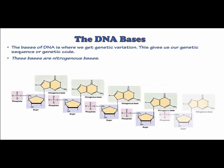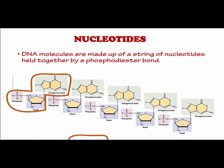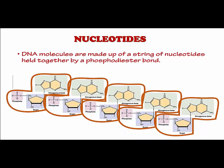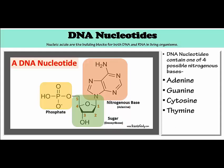The bases of DNA are where we get genetic variation. This gives us our genetic sequence or genetic code. These bases are nitrogenous bases. DNA molecules are made up of a string of nucleotides held together by phosphodiester bonds. DNA nucleotides contain a deoxyribose sugar molecule, which is why DNA stands for deoxyribonucleic acid. DNA nucleotides contain one of four possible nitrogenous bases: adenine, guanine, cytosine, or thymine.